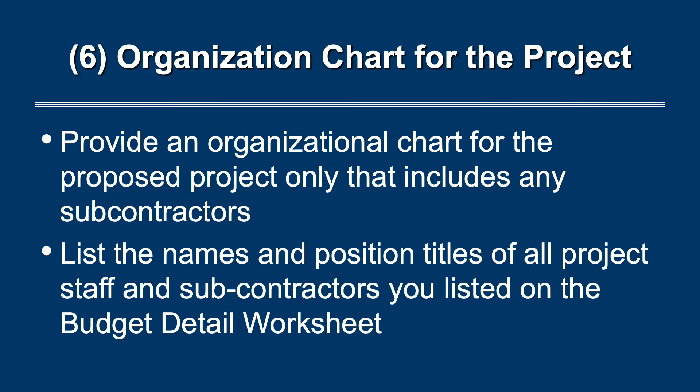Sixth is the organizational chart for the project only. It should only include the people who are directly working on the project, not your entire organization. It should be self-explanatory, organized by reporting lines and function. When an organizational chart works well, the reader can see at a glance the number of senior level staff on a project and the number of people reporting to each senior person. Remember, you need to include the name and position titles of all staff — the same people listed in your budget detail worksheet. Both PowerPoint and Word are useful tools for creating organizational charts.